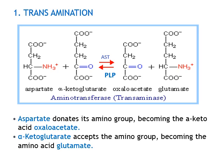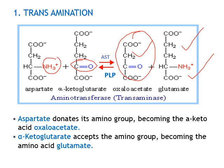Regarding the first function of PLP — transamination — it is an exchange of an amino group between a keto acid, leading to formation of a new amino acid and a new keto acid. For example, aspartate transaminase: aspartate gives its amino group to alpha-ketoglutarate, leading to synthesis of glutamic acid and oxaloacetate. The enzyme responsible is aspartate transaminase, which requires pyridoxal phosphate as coenzyme.